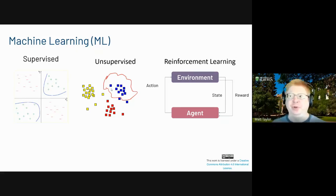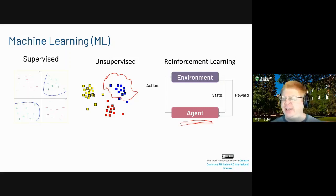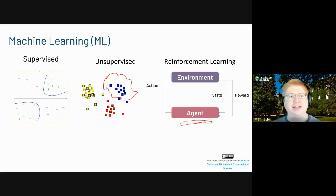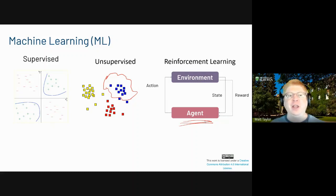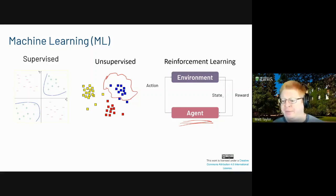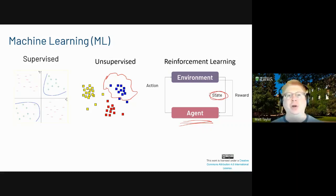In contrast, what we'll be talking about today — reinforcement learning or RL — is very agent-focused. An agent is a virtual or physical thing that interacts with the world around it. The agent can take some action; a robot could take a step and the environment determines what happens next. After you take an action, the environment tells you where you are — you're in a new state — and gives you some reward, and the agent is going to try to maximize that reward.